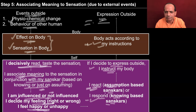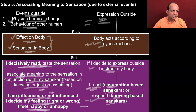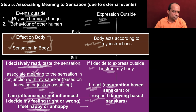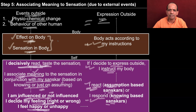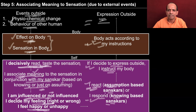A similar thing can be observed in all activities where some events are taking place outside the body. For example, if you are in a room and somebody turns the television set on, it is a physiochemical change happening outside the body, and then the sound reaches you, there is an effect on the body, there is sensation in the body, and then you decisively read the sensation and associate meaning. Whether you have to watch the TV or not will depend upon your sanskar — based on your knowing or assuming — and then you are influenced or not influenced, and you react or respond. If you feel the TV need not be on because it is time to study and it will be disturbing, you can decide not to have the TV on, instruct your body to tell the friend to switch off the TV, and there is expression outside.